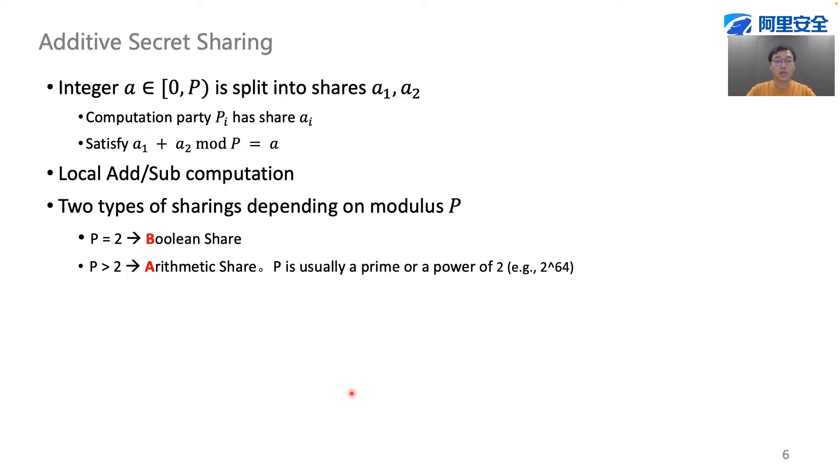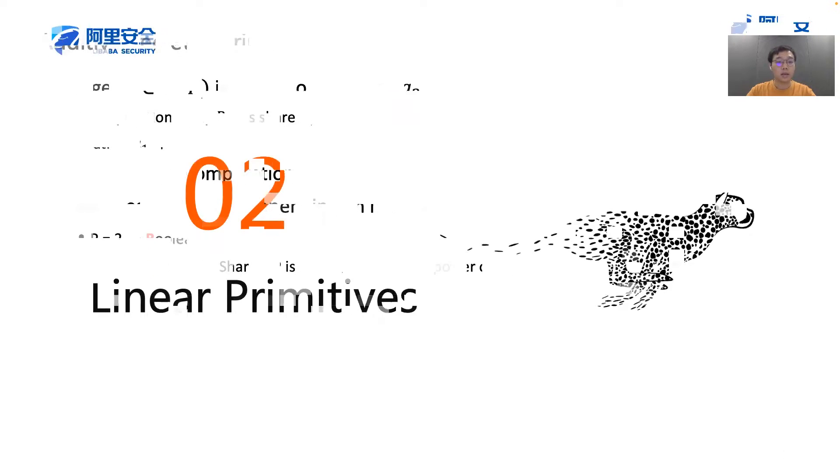Just a brief recap, our system works in the world of additive secret sharing. Now let's first discuss how linear primitives can be implemented in an efficient way.